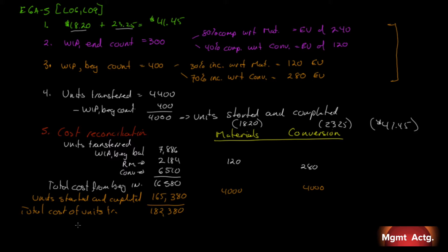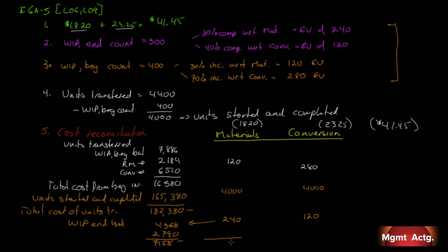Now for the work-in-process ending balance: 300 units with 240 equivalent units for materials at $18.20 gives $4,368, and 120 equivalent units for conversion at $23.25 gives $2,790. The total value of ending inventory is $7,158. Adding $182,380 and $7,158, our total costs accounted for in the cost reconciliation is $189,538.